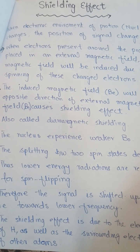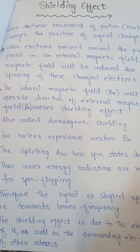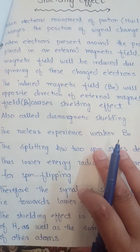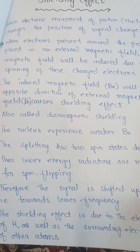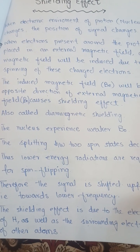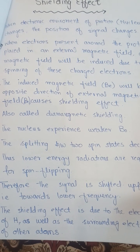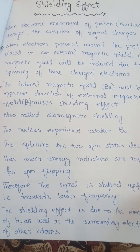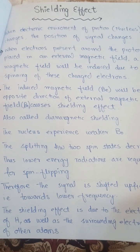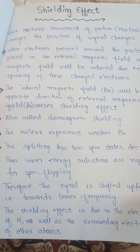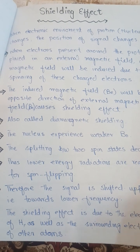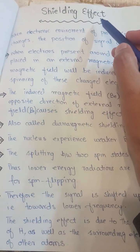In our previous video we studied the different characteristics of NMR peaks or signals, in which we studied chemical shift and the position of NMR signals. Today we will discuss in detail how the position of NMR peaks or signals changes according to the environment of the protons, in which the major topic is shielding effect.